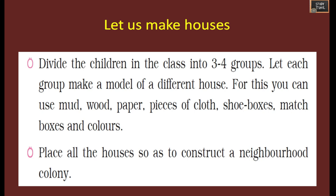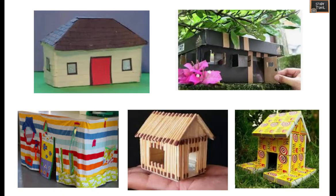Activity - Let's Make Houses: Divide the class into three to four groups. Let each group make a model of a different house using mud, wood, paper, pieces of cloth, shoe boxes, matchboxes, and colors. Place all the houses together to construct a neighbourhood colony. For example: a mud house, one made with shoe boxes, one with table cloth, one with matchsticks, and one with matchboxes. You can try different types and collect them all to form a neighbourhood colony.